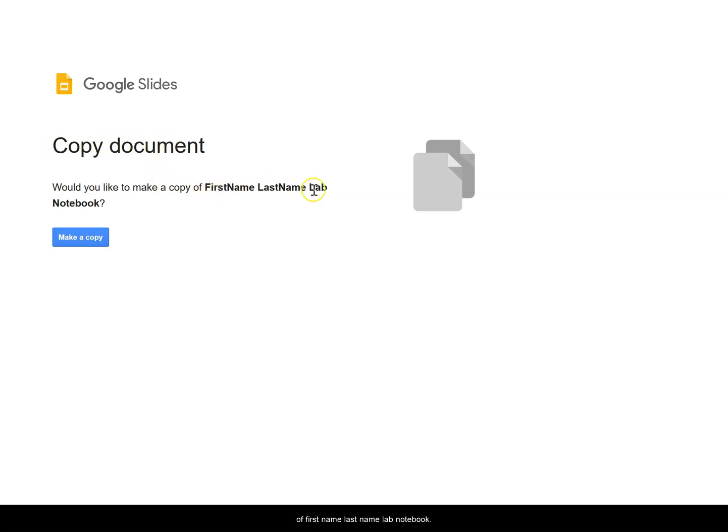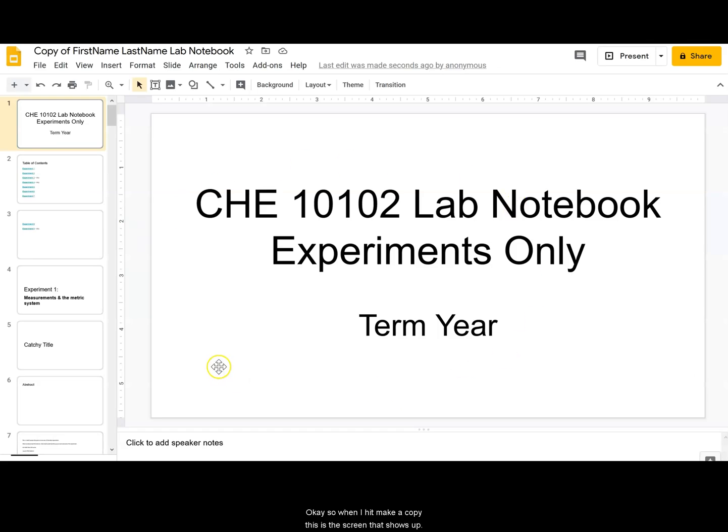It's going to ask me right away: do I want to make a copy of 'First Name Last Name Lab Notebook' — and that's exactly what I want to do. I've tried to make this as easy as possible, so I'm going to click 'Make a copy.' I'll pause so I can make sure to get the whole screen.